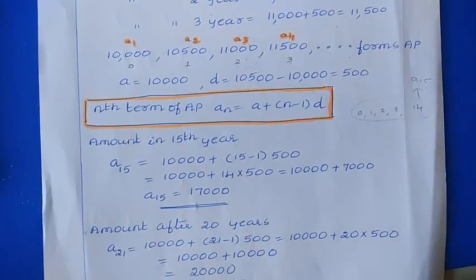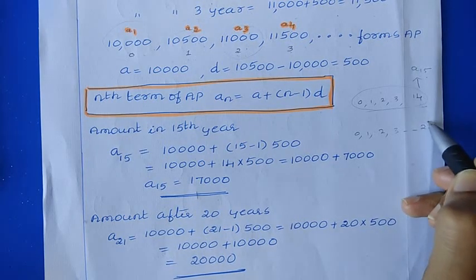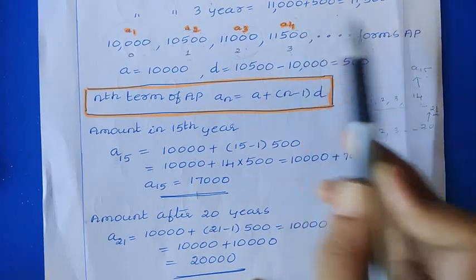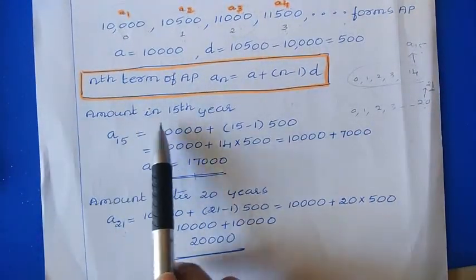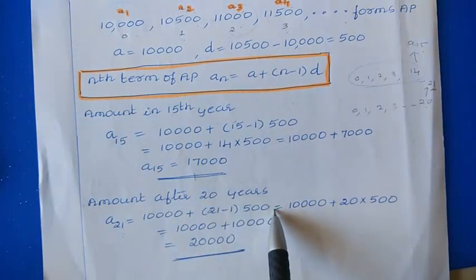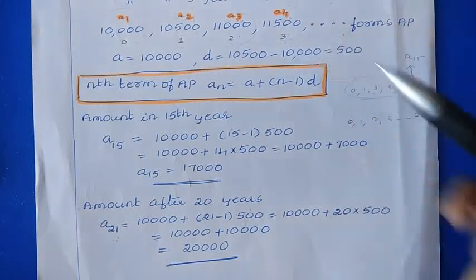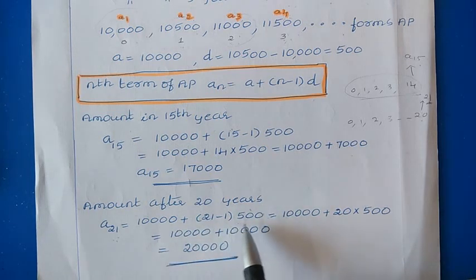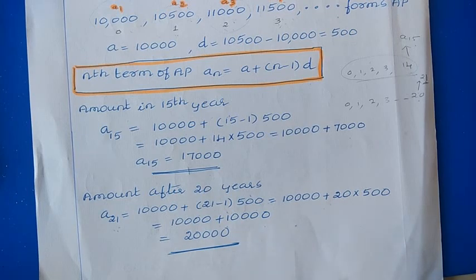Next, we calculate the amount after 20 years. Amount after 20th year means from year 0 up to year 20, all included. Since second year = term 3, third year = term 4, it follows that 20th year = term 21. So we find A₂₁ = 10,000 + (21 − 1) × 500 = 10,000 + 20 × 500 = 10,000 + 10,000 = 20,000. So the final answer is ₹20,000.